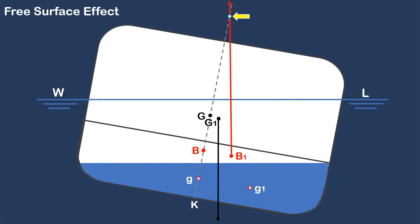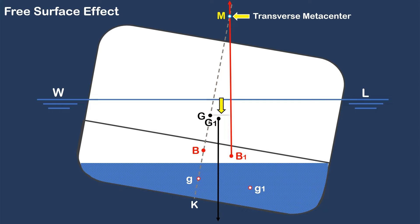The point where the buoyancy force and the ship's centerline intersect is called the transverse metacenter, capital M. The horizontal distance between the ship's center of gravity, capital G, and the vertical line of the buoyancy force is called the righting lever, GZ, which determines the ability of the ship to return to its upright position when she is tilted.